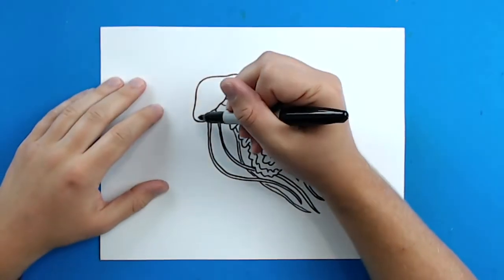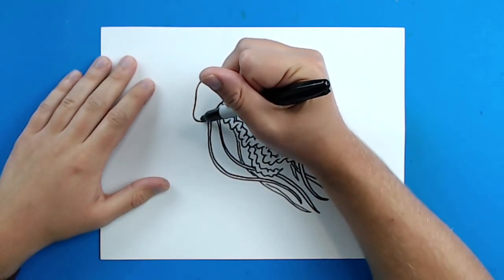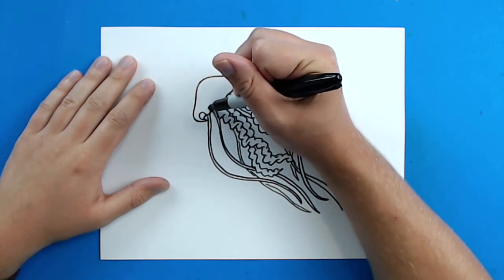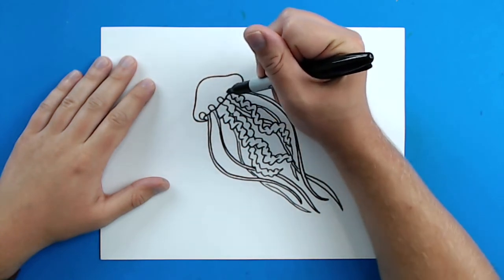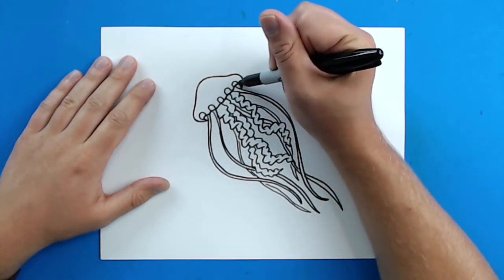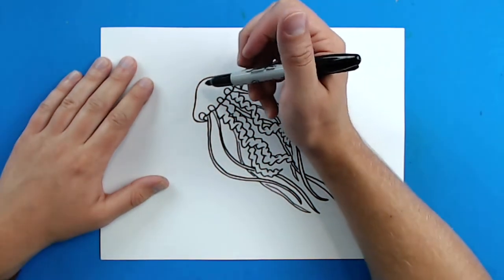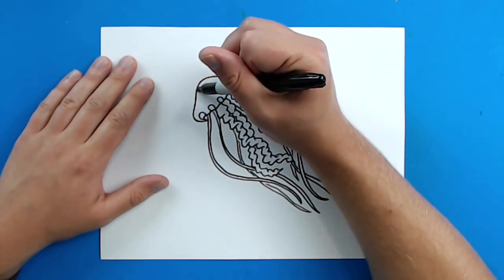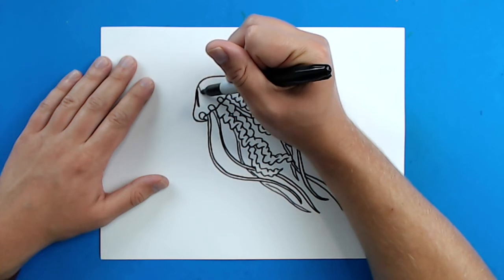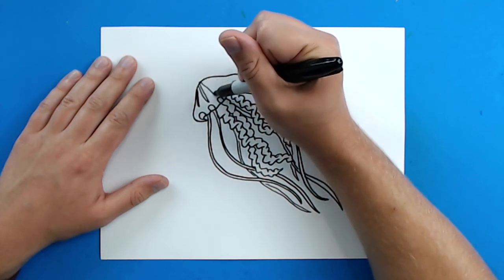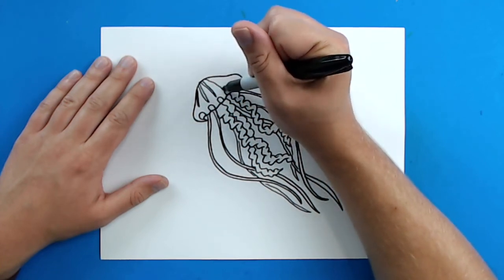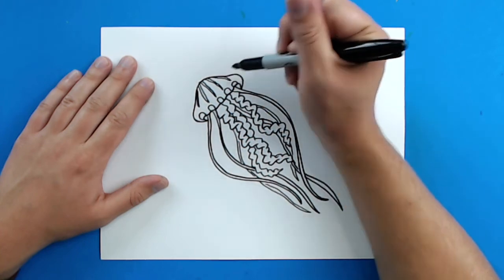Before we go, I want to add one more little detail on here. I'm going to add some little bumps around here, like this. And then on top of here, I'm going to add some little kind of thin, skinny stripes, like that.